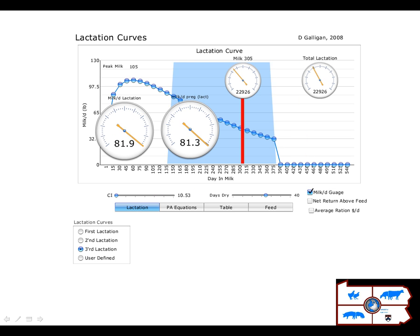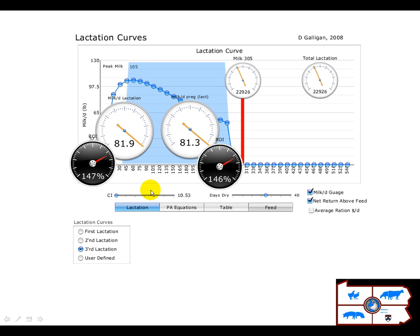Now we can also look at this somewhat economically. So I'm going to drive this back to an 11-month calving interval, a little slightly under, and look at what the net return above feed cost is. And we see that the returns when we have a very short calving are pretty equal to the entire lactation versus when the cow gets pregnant.